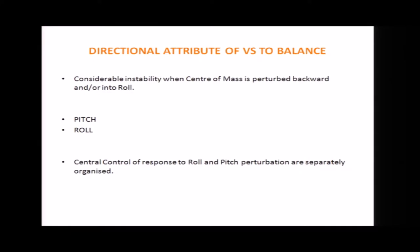Now let's see the directional attributes — the motor aspects of the vestibular-spinal system in balance. Whenever there is a vestibular loss, there is considerable instability when the body is moved in either direction. The two key movements we are talking about in vestibular-spinal control are pitch movement and roll movement. We will see how the vestibulospinal tract manages these two movements to stabilize the body.